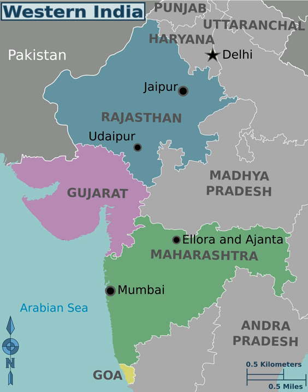Thereafter, the area was under Mughal rule. Later, the Maratha Empire, which arose in Western Maharashtra, came to dominate a major portion of the Indian subcontinent. However, its defeat by the British in the Anglo-Maratha Wars left most of India under colonial rule. The region then experienced great upheavals during the struggle for Indian independence. Gandhi's Dandi March took place in Gujarat. The region became part of independent India in 1947, and the present state boundaries were drawn based on linguistic considerations in 1956.